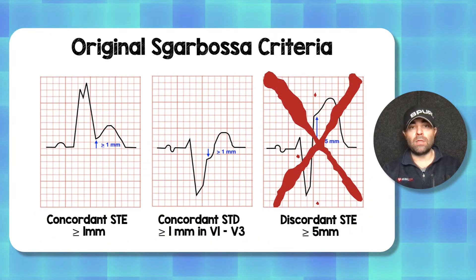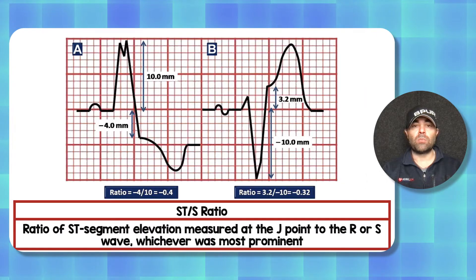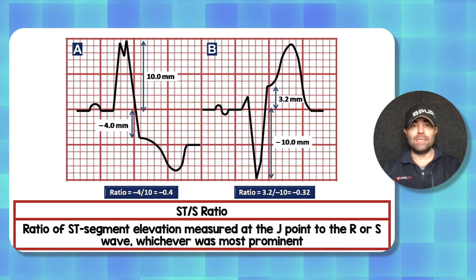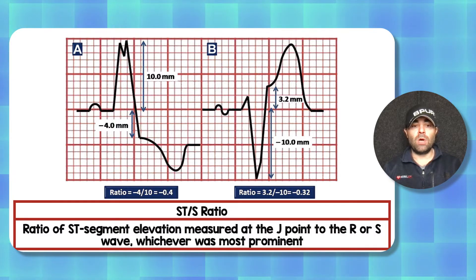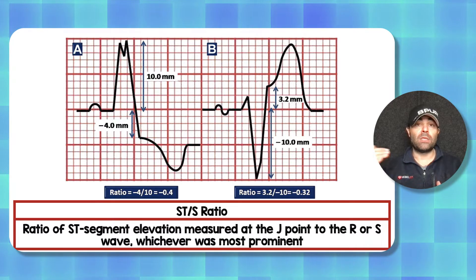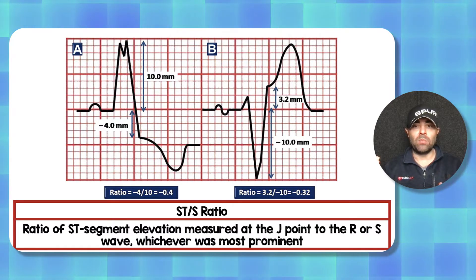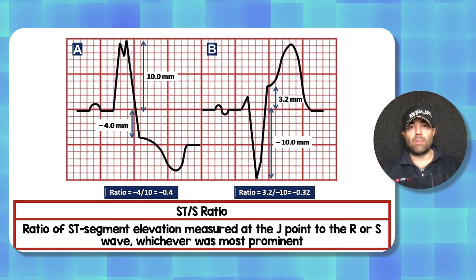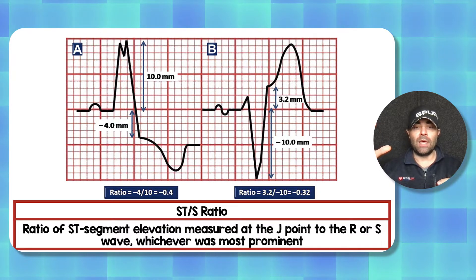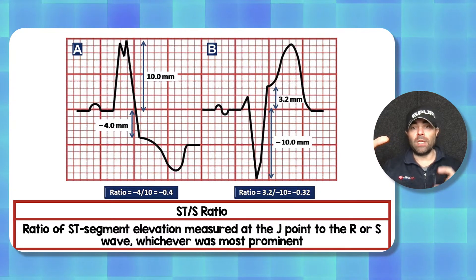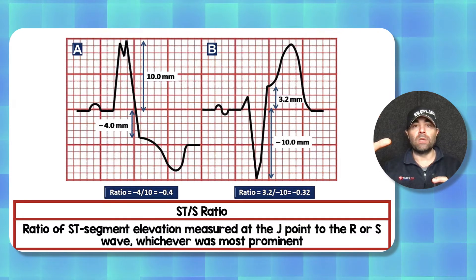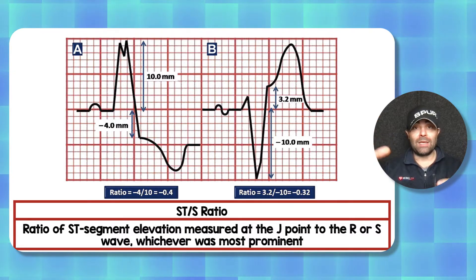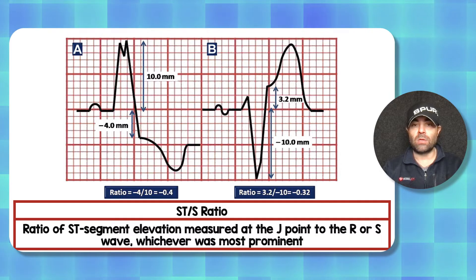So if we're getting rid of that third component, what are we replacing it with? The modified version looks at the ST to S ratio — the ratio of the ST segment elevation measured at the J point compared to the R or S wave, whichever is the most prominent. It's basically looking at the amplitude of the ST segment elevation at the J point and comparing it to the amplitude of the QRS. If that amplitude is greater than 25%, there is a high likelihood you are dealing with an occlusion myocardial infarction.